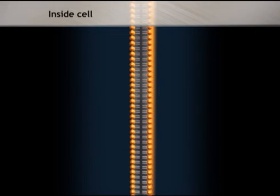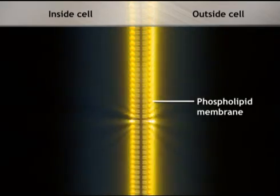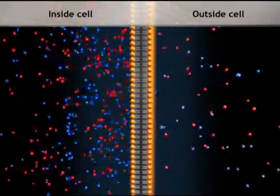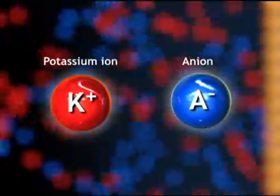These two chambers represent the inside and outside of a biological cell. A phospholipid membrane separates the two chambers. Both chambers contain a potassium salt dissolved in water as potassium ions and anions.